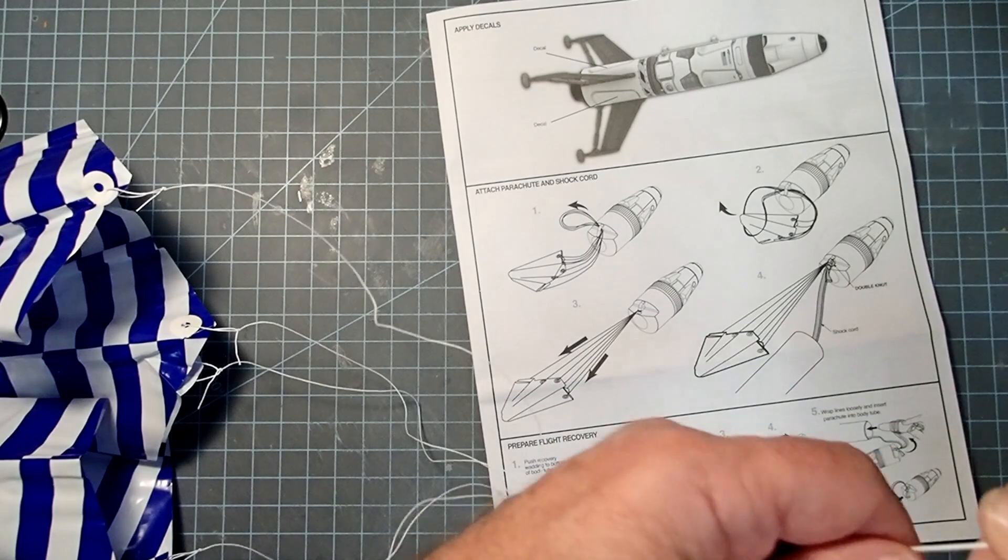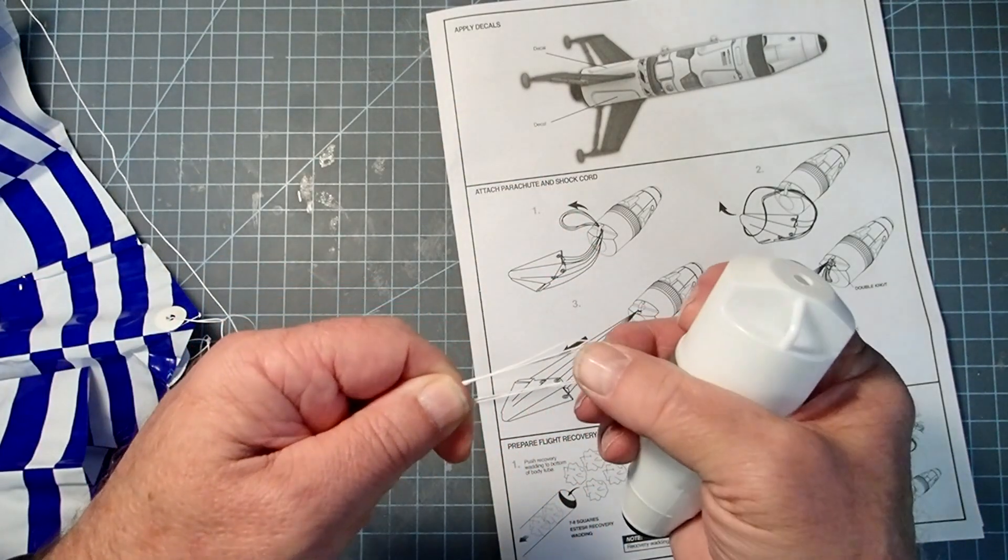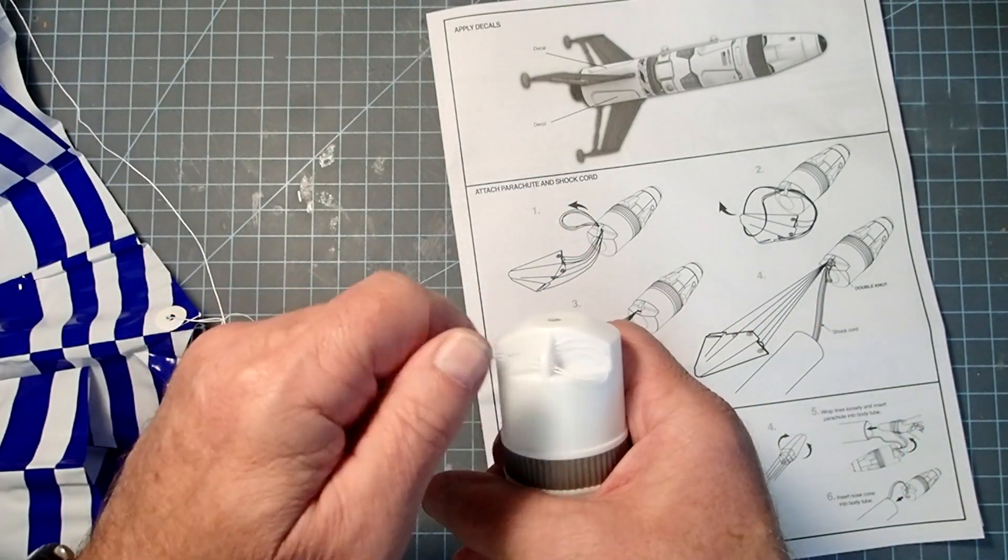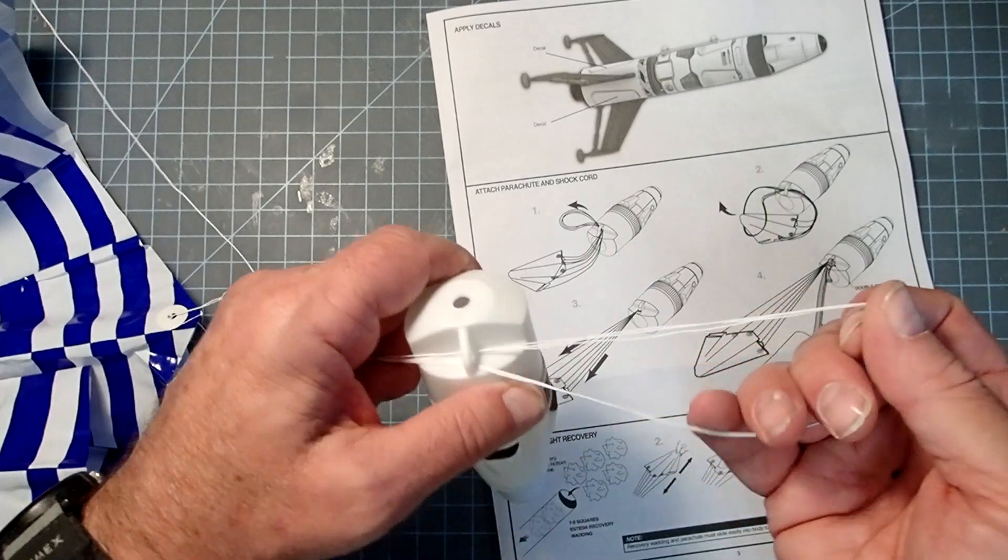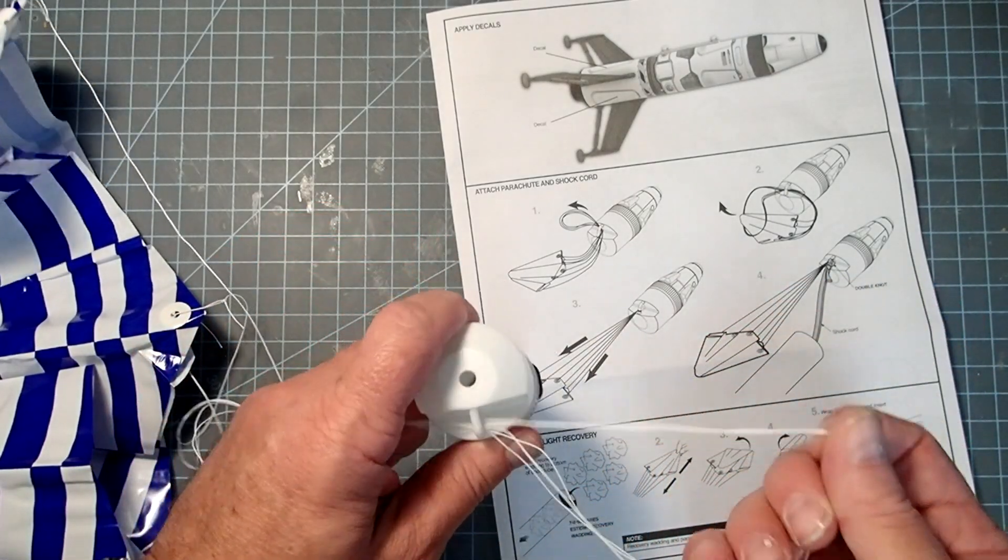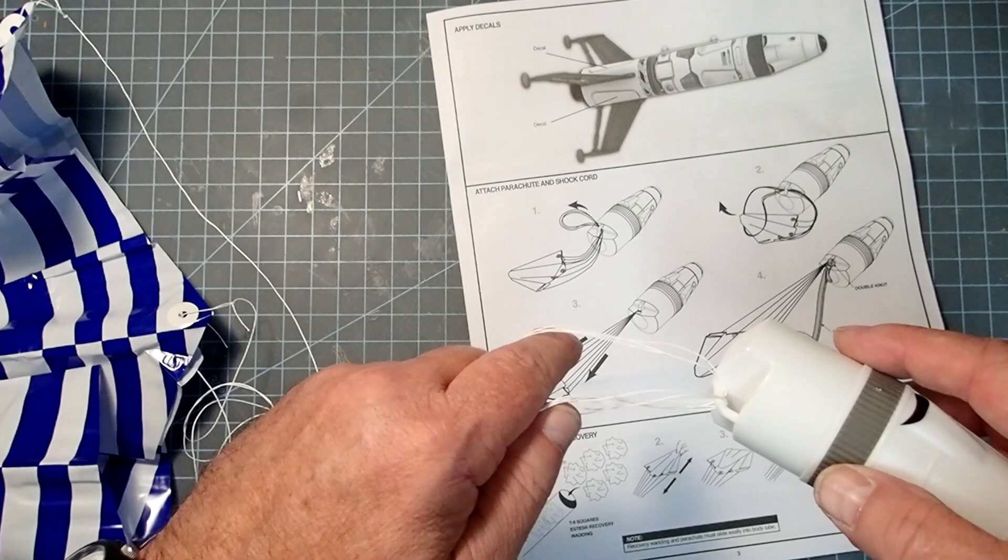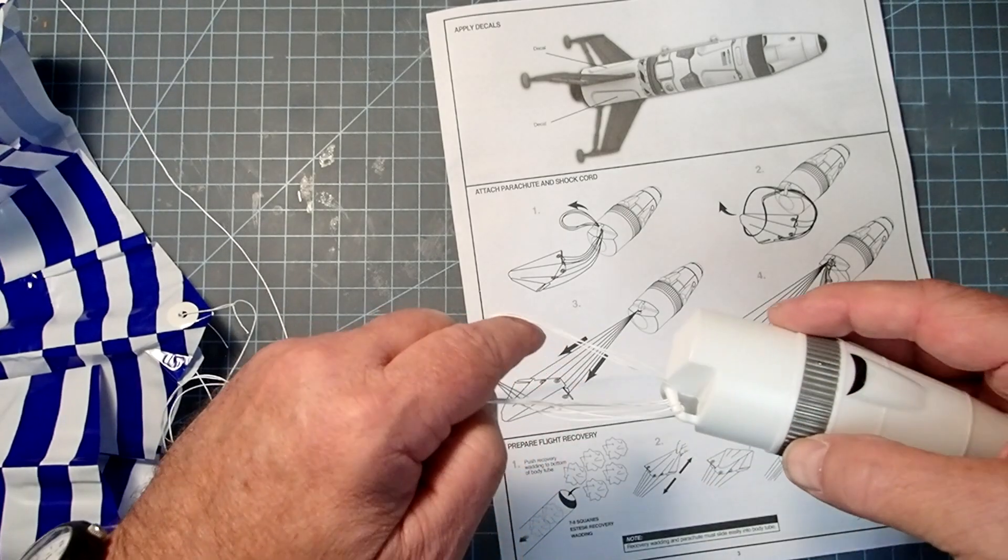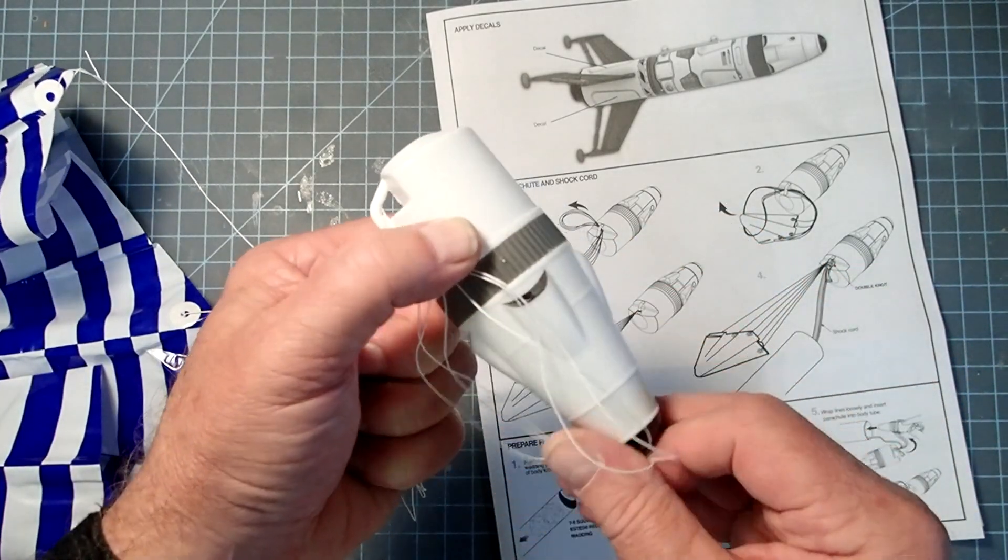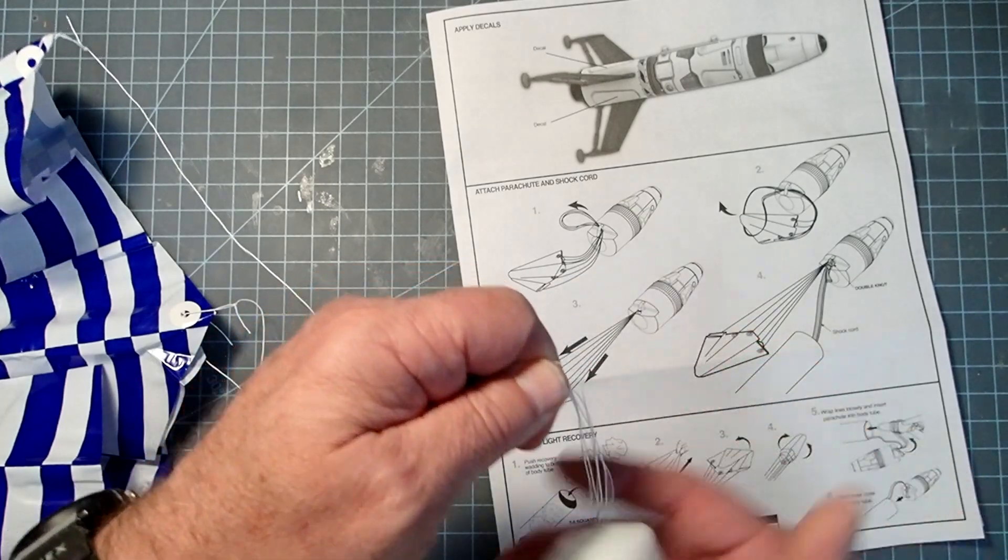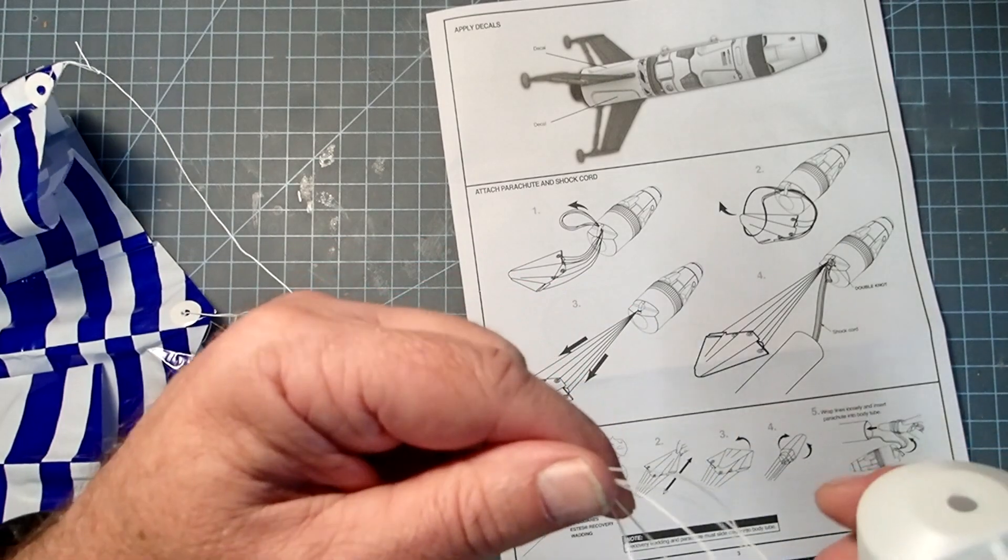Now, there are two ways to do this. The way they show in the instructions, you simply take the loops here and pass them through the eyelet on the nose cone. And then you open those back up. You can either pass the parachute through the loop or pass the nose cone through the loop. It comes out the same either way. Then you'll tighten those down to form a knot. Now, I am not going to do mine that way. If you've seen any of my other videos, you know I don't like to tie parachutes directly onto nose cones. Oh, now I've really done it.